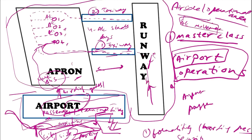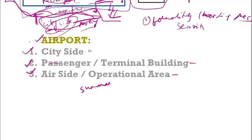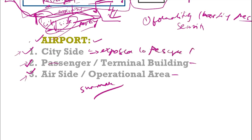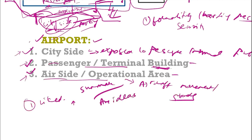The third area — the air side or operational area — is where actual aircraft movement happens. The aircraft comes, goes to the taxiway, the apron, and the other airport boundaries. Quick summary: technically the airport is categorized into three areas — city side, passenger or terminal building, and air side or operational area. The city side is exposed to the public; the terminal building is where passengers complete formalities; the air side is where aircraft movement happens.